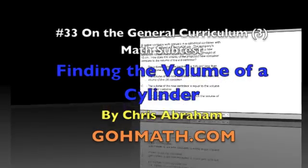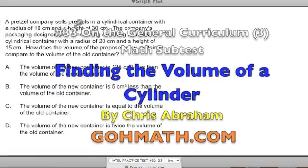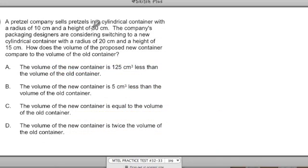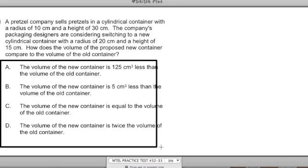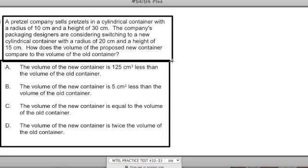Number 33. A pretzel company sells cylindrical containers with a radius of 10 centimeters and a height of 30 centimeters. The company's packaging designers are considering switching to a new cylindrical container with a radius of 20 centimeters and a height of 15 centimeters. In the last problem we broke it up into three parts, but I want to break it up into two sections here.